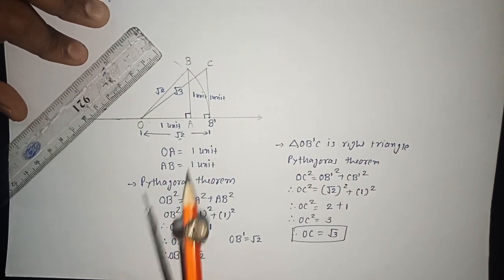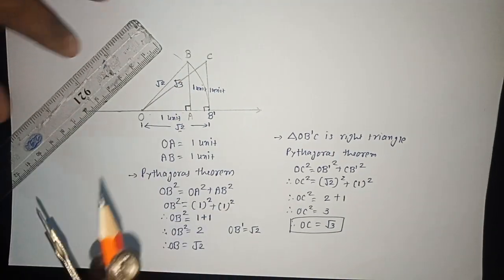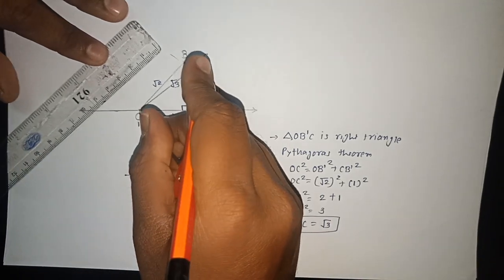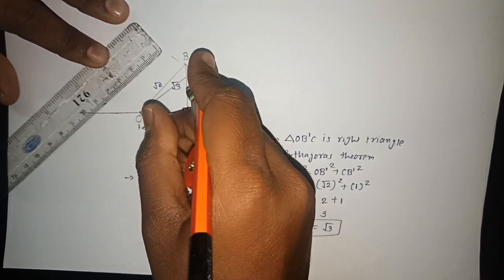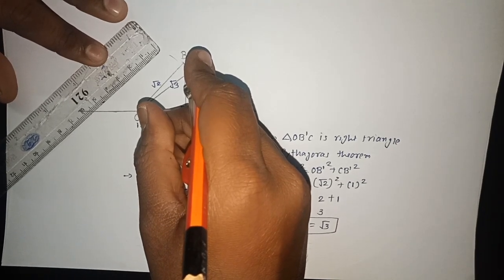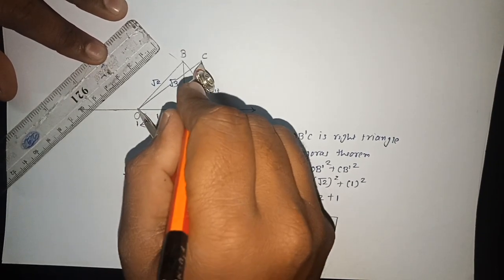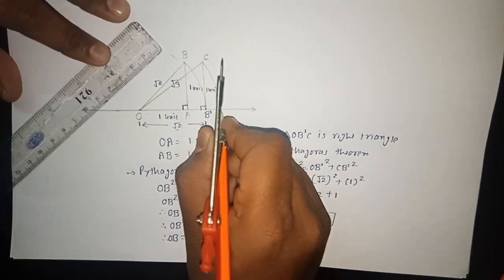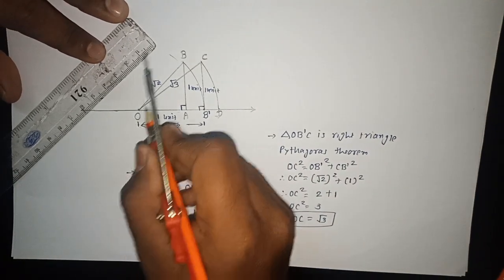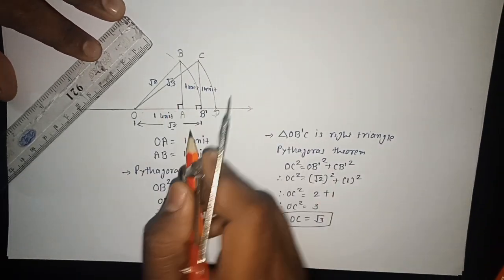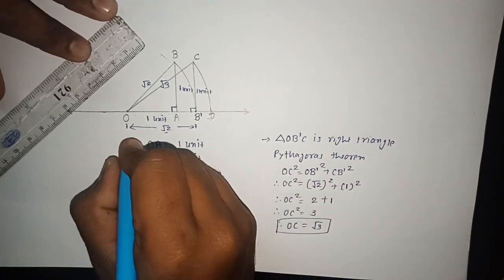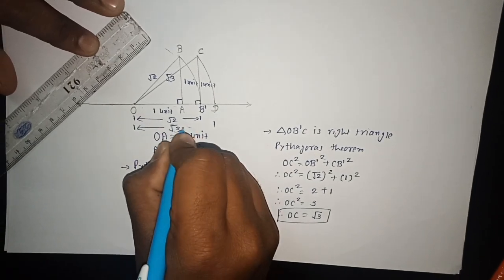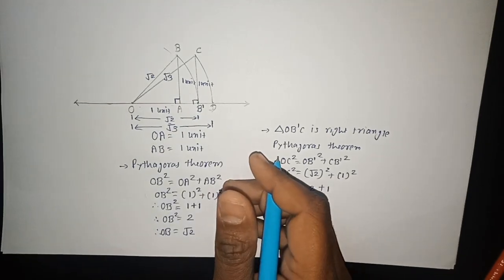So now I will represent root 3 on the number line. I will take the measure from O to C, and by putting the compass here I will draw the arc using measure OC, which intersects the number line at a point. Let this point be D. So OD is equal to under root 3. This is how you can represent under root 3 on the number line.